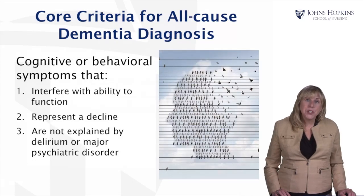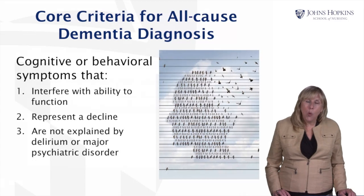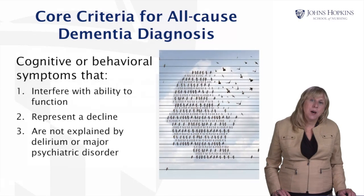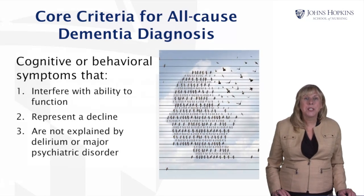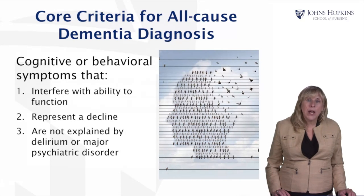The dementia diagnosis requires cognitive or behavioral symptoms that must interfere with a person's ability to function in everyday life. They represent a slow and progressive decline that is irreversible, and they're not explained by some underlying medical condition such as a delirium or a major psychiatric disorder. Usually in the diagnostic process, we do some lab work to rule out any underlying medical condition that could explain these changes in function. Once those are ruled out, we may then consider a dementia diagnosis.